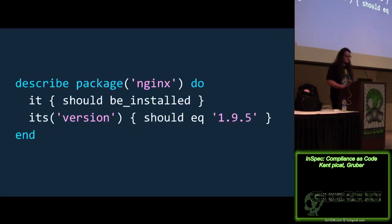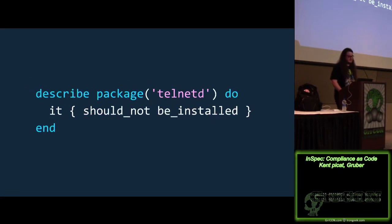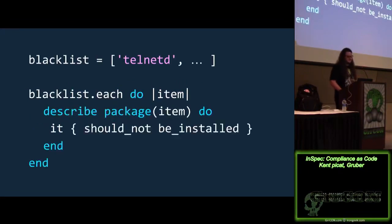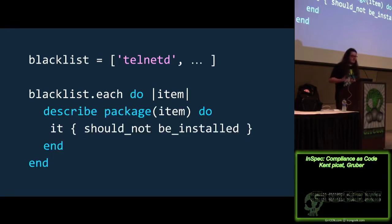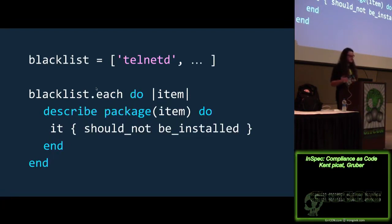Since it's just Ruby, you can define an array of packages you don't want installed on your system — they're never going into production. For each one in the blacklist, describe that this package should not be installed. This becomes again very human readable. There are plenty of examples online.